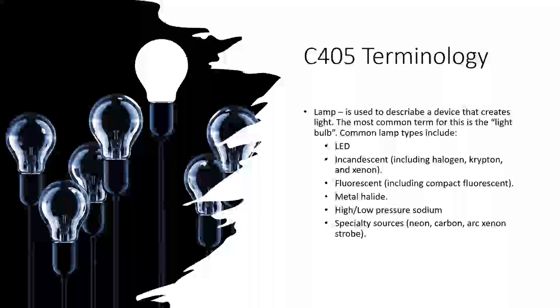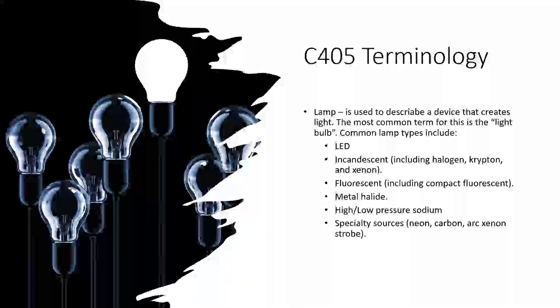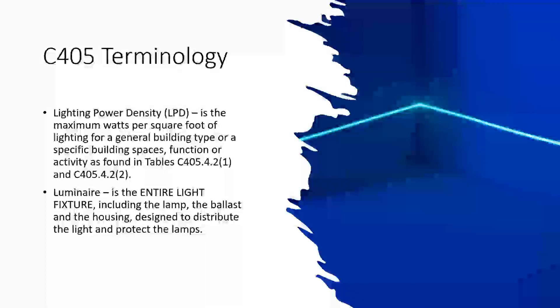The term 'lamp' refers to what we would call a light bulb. Even though LEDs have diodes, we still refer to them as lamps — a series or linear row of diodes in a fixture is still one lamp. It includes LED, incandescent, fluorescent, metal halide, low sodium, high sodium, and specialty sources. Another important term is lighting power density, or LPD — the maximum watts per square foot of lighting for a general building type or specific space. There are tables that correlate it depending on whether you're using the building type or space-by-space method. When I say 'luminaire,' I'm referring to the entire light fixture — the bulb, housing, ballast, everything designed within it.